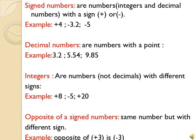First, what are signed numbers? Signed numbers are numbers — they can be integers and they can be decimal numbers — with a sign, whether it is positive or negative. A signed number is a number with a positive (plus) or negative (minus) sign. For example: plus 4, minus 3.2, minus 5. All these are signed numbers. In math, even if we don't have any sign, it means positive.